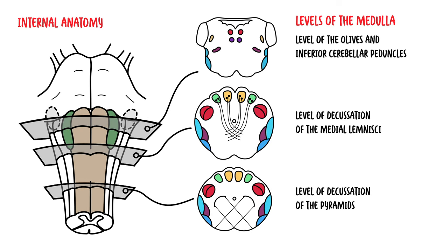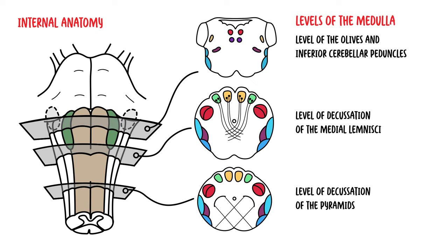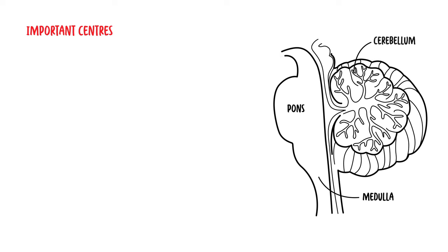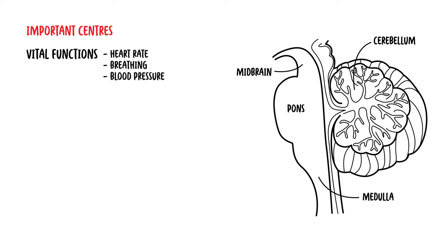So those were the important levels of the medulla oblongata: from the top, the level of the olives; below that, the level of decussation of the medial lemniscus tract carrying sensory information; and then the level of decussation of the pyramids for the motor tracts. The medulla is also the location of the nuclei for cranial nerves 9, 10, 11, and 12, and contains many important centers for controlling vital functions such as heart rate, breathing, and blood pressure.